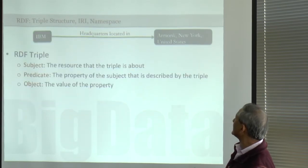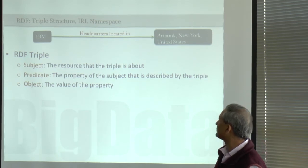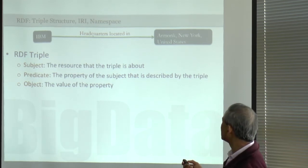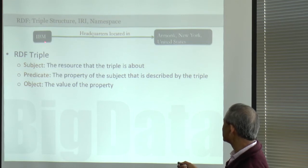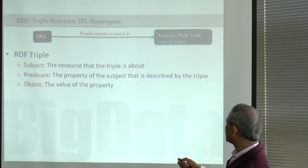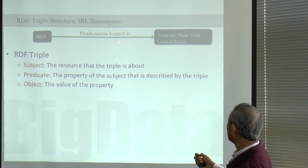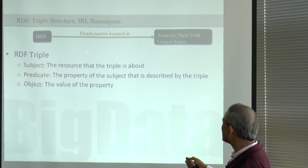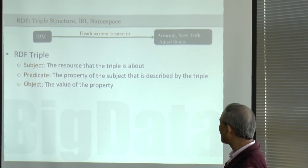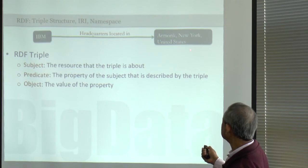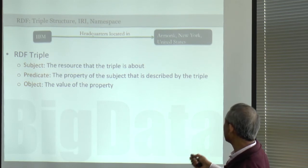RDF essentially has a so-called triple structure. You express things as a subject — this is what the triple is about, what the fact is about — a predicate, a property describing the subject, the relationship or attribute, whatever you call it, and an object, the value of this property. You can have it in different forms. Everything is a URI or URL — web-addressable resources.